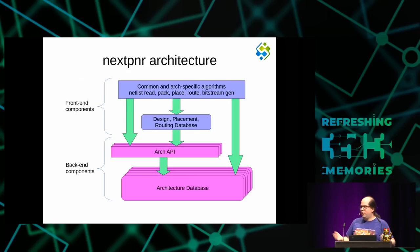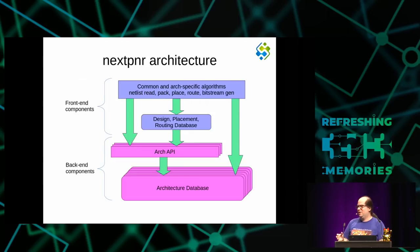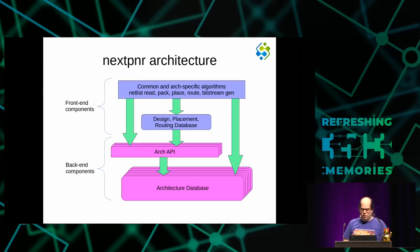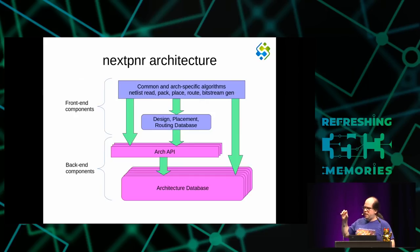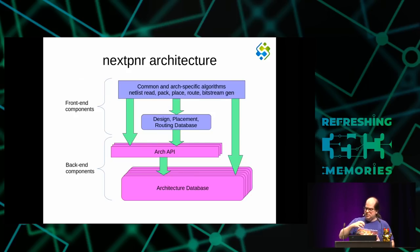There is a router and placer, but they may be interleaved with architecture-specific elements. For example, you might have an architecture-specific router handling clock routing, followed by the generic router for all ordinary remaining nets. These algorithms access a design database containing the netlist being placed, and access the architecture database through the architecture API. The architecture database itself can be stored very differently for different architectures.